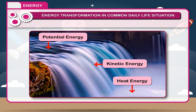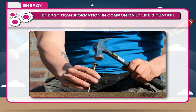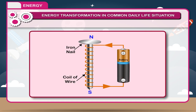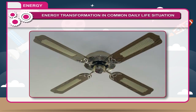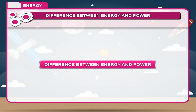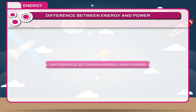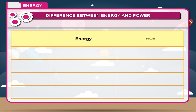On striking the ground, water also produces heat and sound energy. When we hammer a nail, mechanical energy is converted into heat energy. Electrical energy is converted into magnetic energy with the help of an electromagnet. In an electric fan, electric energy is converted into mechanical energy.